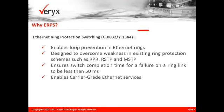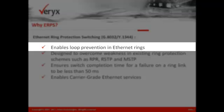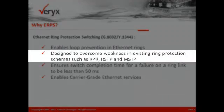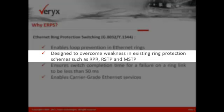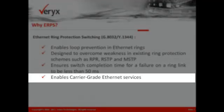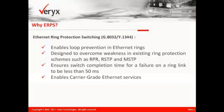Ethernet ring protection switching, as defined in the ITU-T G.8032 recommendation, ensures loop avoidance in an Ethernet ring by guaranteeing that at any time traffic may flow on all but one of the ring links. It has been built to overcome the drawbacks in existing variants of spanning tree protocols and resilient packet rings, and achieves rapid service restoration, reliably enabling carrier class services in Ethernet ring topologies.